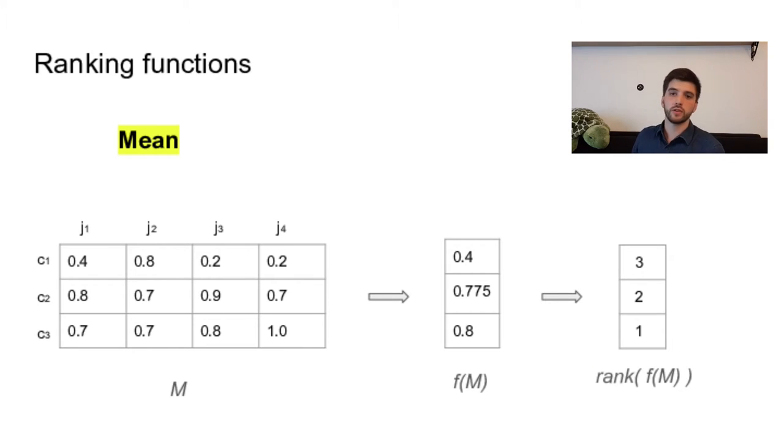So we have six ranking functions under study. The first one is a simple mean function. So you just average each score for each candidate and obtain a mean score. So the winner will just be the candidate with the highest average score. So here, it is C3.